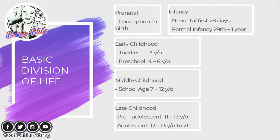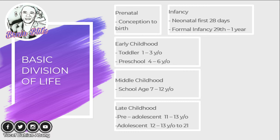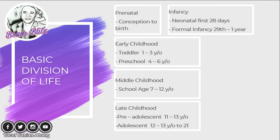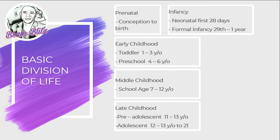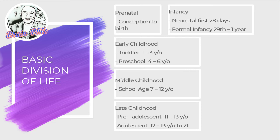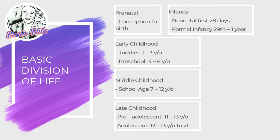There are five major divisions of life in childhood. Prenatal: conception until birth. Infancy is divided into neonatal — the first 28 days — and formal infancy from day 29 to one year old. Early childhood covers toddlerhood from one to three years old and preschool from four to six years old. Middle childhood is school age from seven to twelve years old. Finally, preadolescence is eleven to thirteen years old, and adolescence ranges from twelve or thirteen to twenty-one years old.